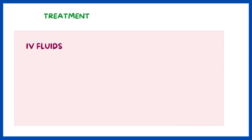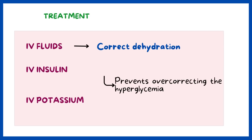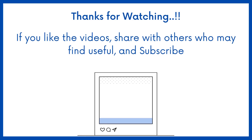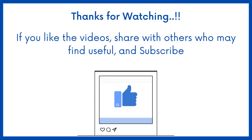Treatment of DKA relies on intravenous fluids to correct dehydration, intravenous insulin, and potassium. Sometimes, to prevent overcorrecting the hyperglycemia, a small amount of dextrose is given with the insulin. Therefore, the answer is option A. If you find this video helpful, share it with others who may find it helpful too.